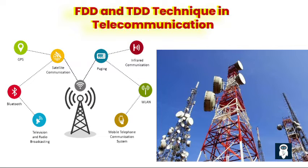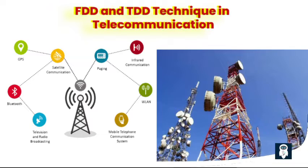Modern digital mobile radio systems are always full duplex capable. Essentially, two basic duplex procedures are employed: frequency division duplex (FDD), using different frequency bands in each direction, and time division duplex (TDD), which periodically switches the direction of transmission.